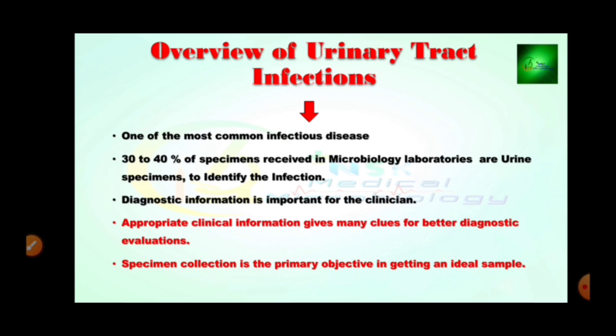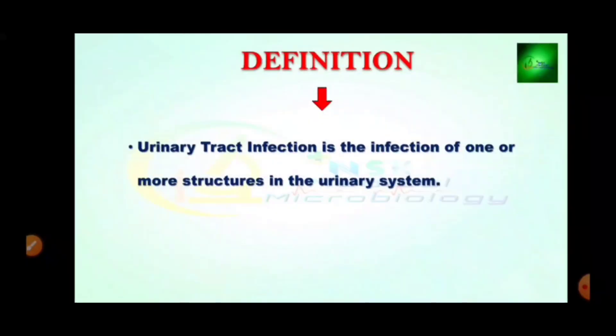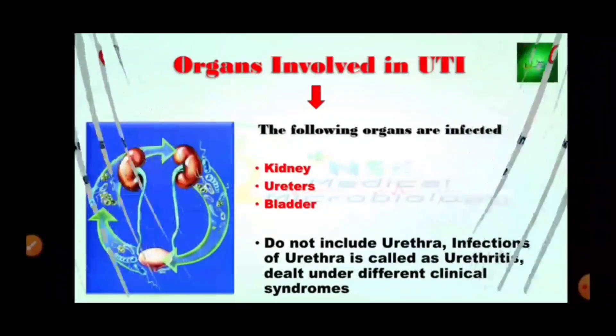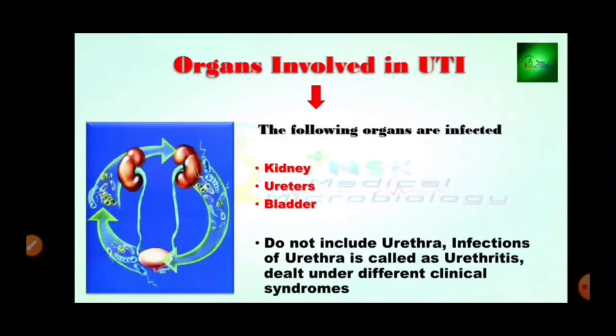Specimen collection is the primary objective in getting an ideal sample. The definition of Urinary Tract Infection is the infection of one or more structures in the urinary system. The urinary system is composed of many parts such as kidney, urinary bladder, and ureter. The urethra is not included because urethra infection is called urethritis — it is just inflammation of the urethra because of different clinical syndromes, not caused by bacteria, microorganisms, viruses, or fungi.